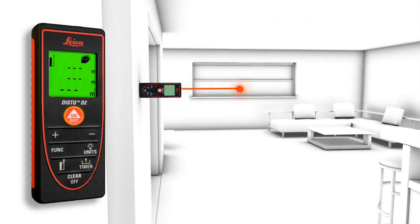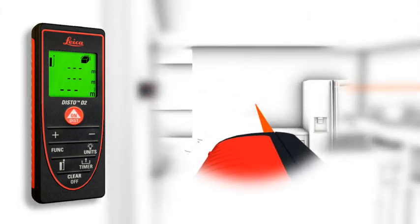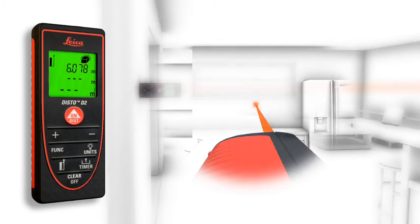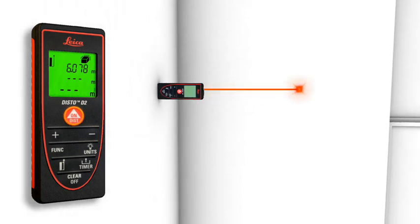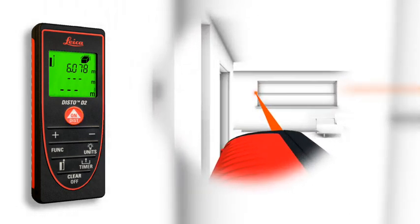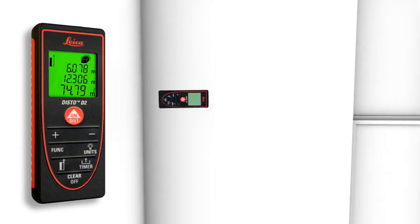Two to three simple measurements are enough and the Leica Disto D2 calculates fast and precise wall and ceiling areas as well as volumes. Single and final results can be displayed at the same time due to the three-line display.